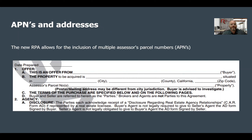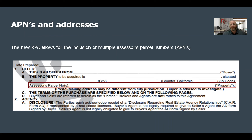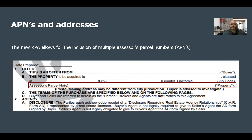The new RPA allows for the inclusion of multiple assessor parcel numbers, which is nice. In case you have a home selling with the lot behind it or something, you could put in both APNs now — they gave us some extra room. This was a good addition because multiple APNs being sold at the same time does come up. They also included a clause regarding addresses: the postal mailing address may be different from the city jurisdiction, and buyer is advised to investigate.